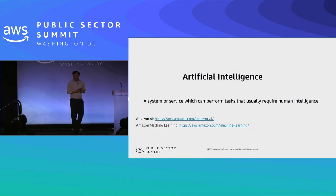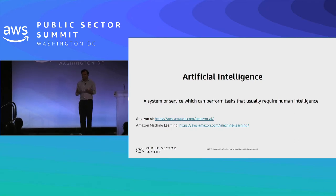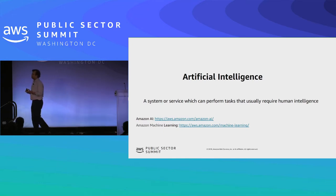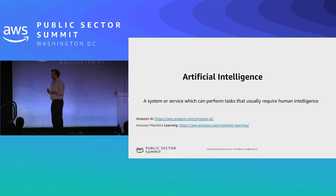Just a brief recap. If you ask ten or a hundred people what AI is, you'll get a hundred different answers. We sometimes mix machine learning, AI, and deep learning, but these are three different subjects. For the sake of today's discussion, artificial intelligence is a system or service that can perform tasks that usually require human intelligence. There are articles and tutorials online where you can find out how to train your own models.